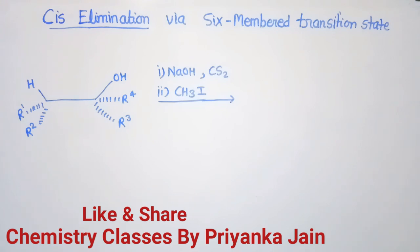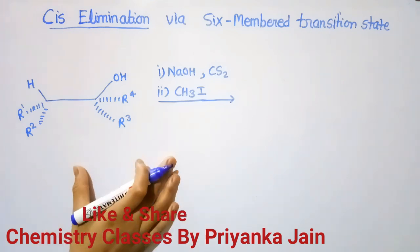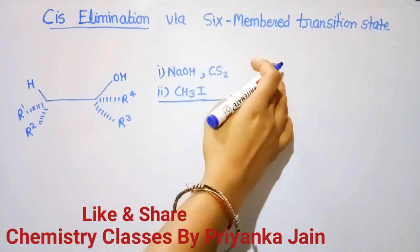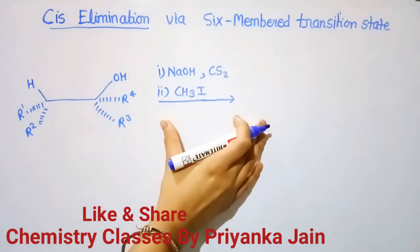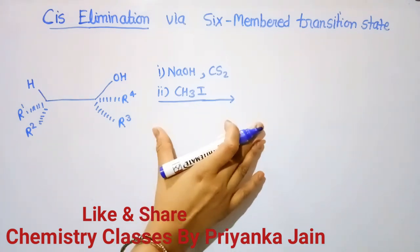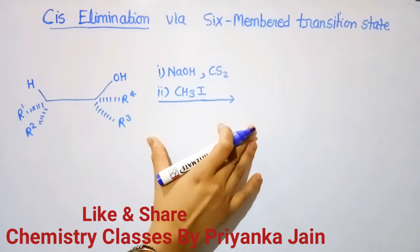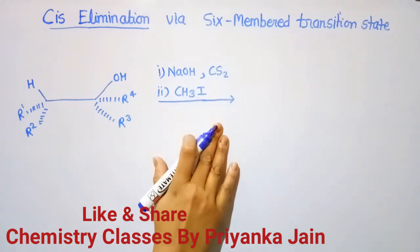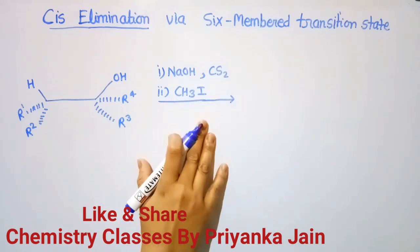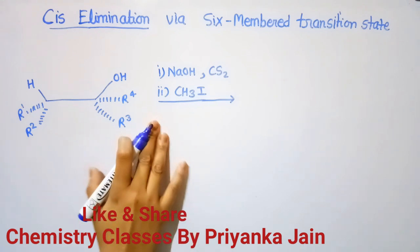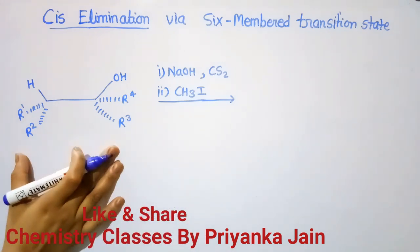Pyrolysis of the xanthates involves the cis elimination process. It means it is a concerted reaction and it proceeds via a 6-membered cyclic transition state. In this process, there is no change in the configuration of the carbon atoms — there is no rearrangement of the carbon skeleton in the whole reaction, so the configuration will remain as it is.